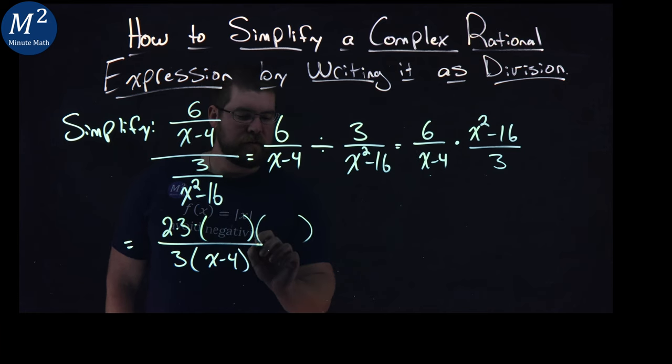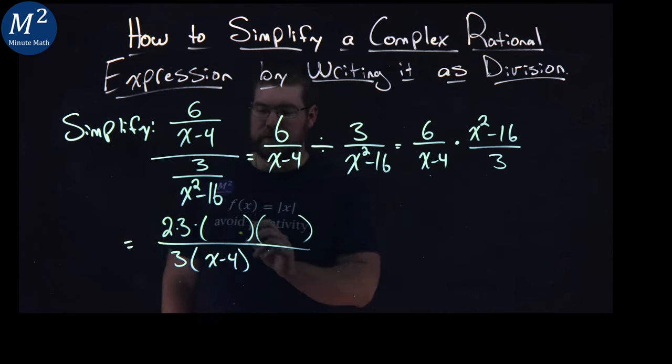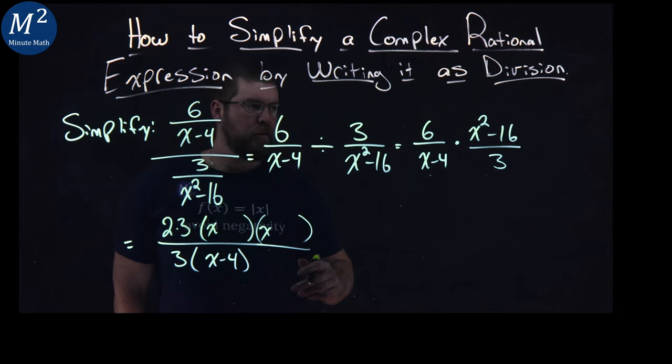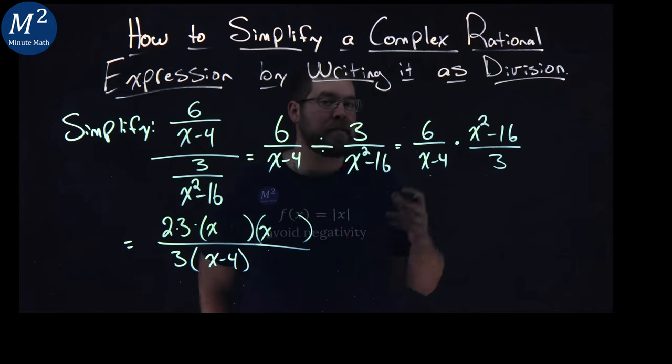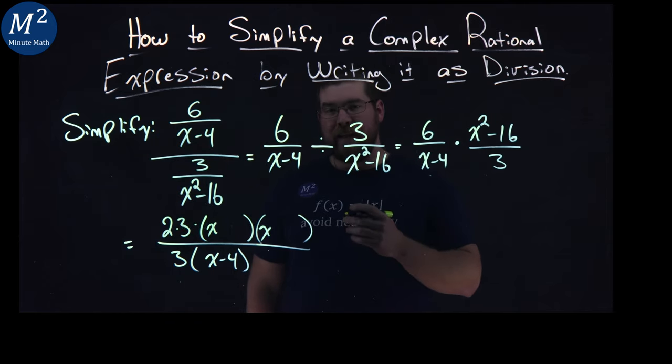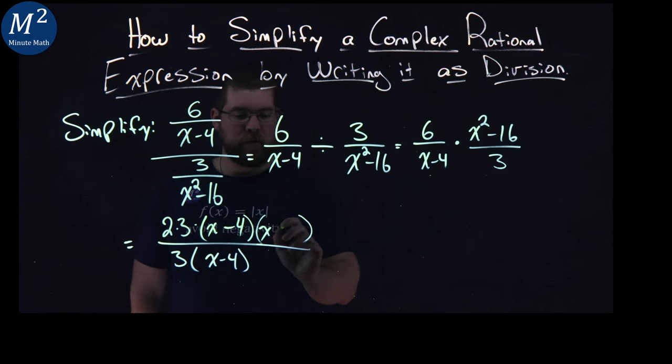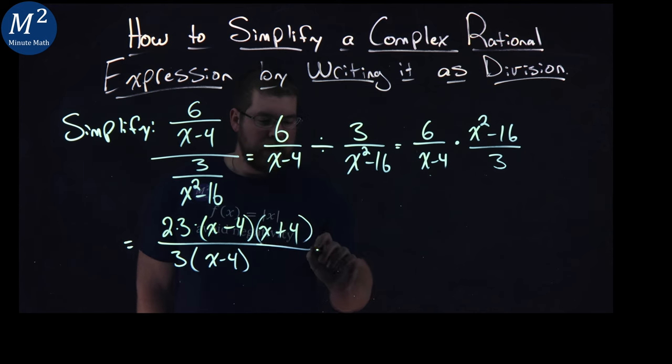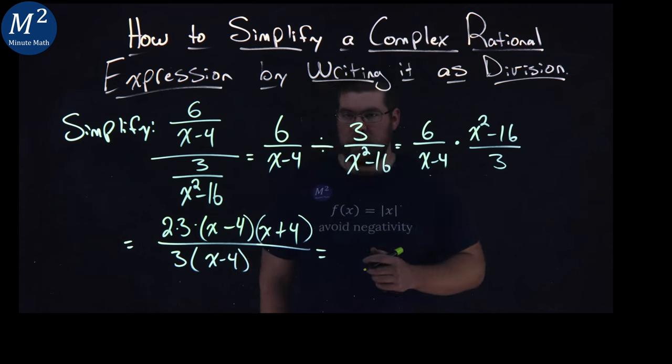And then, what factors here, the x squared minus 16? Well, what multiplies to be negative 16 and adds to be 0, which is the b value there, and that's going to be negative 4 and positive 4. So, we have x minus 4 times x plus 4 here.